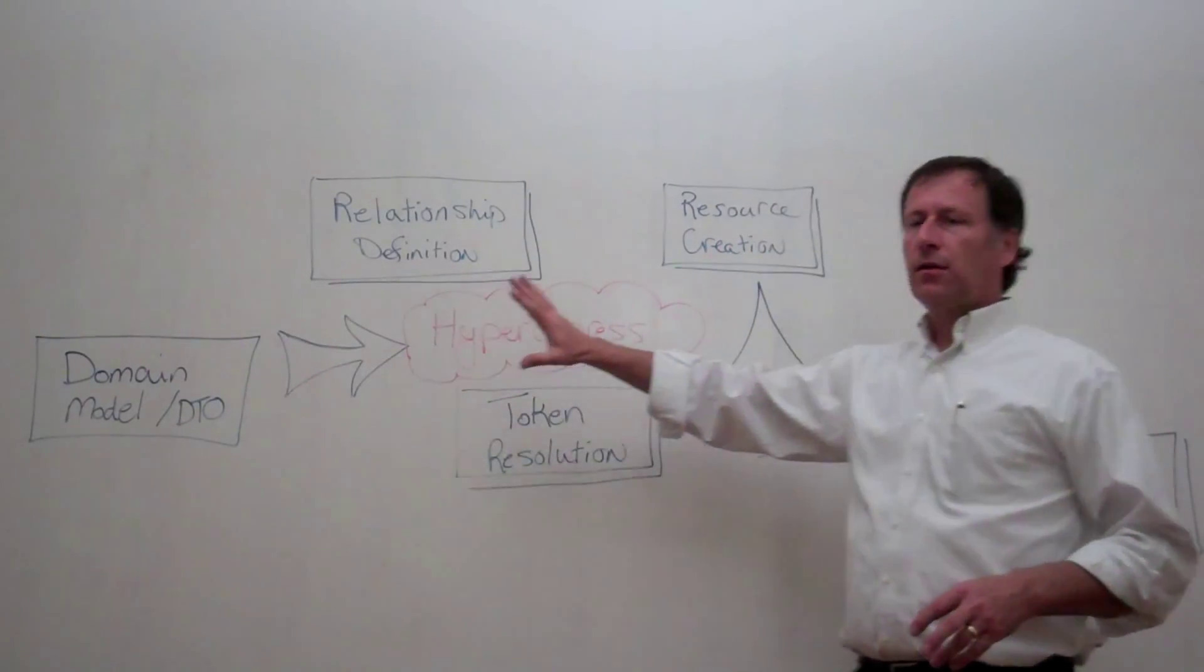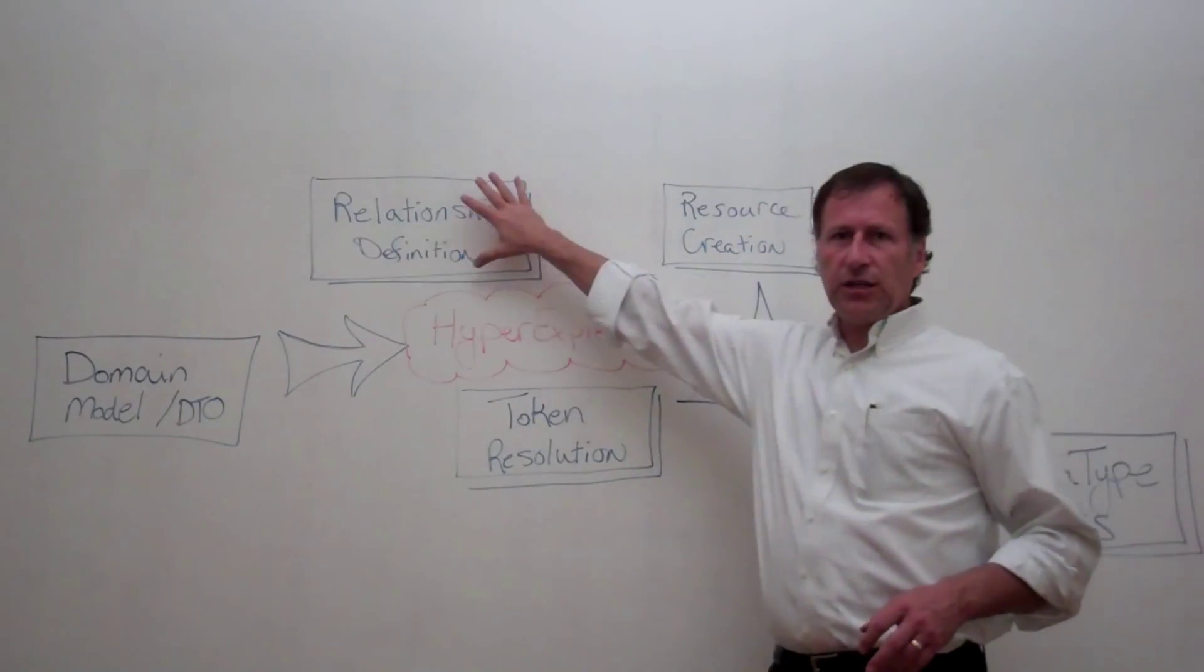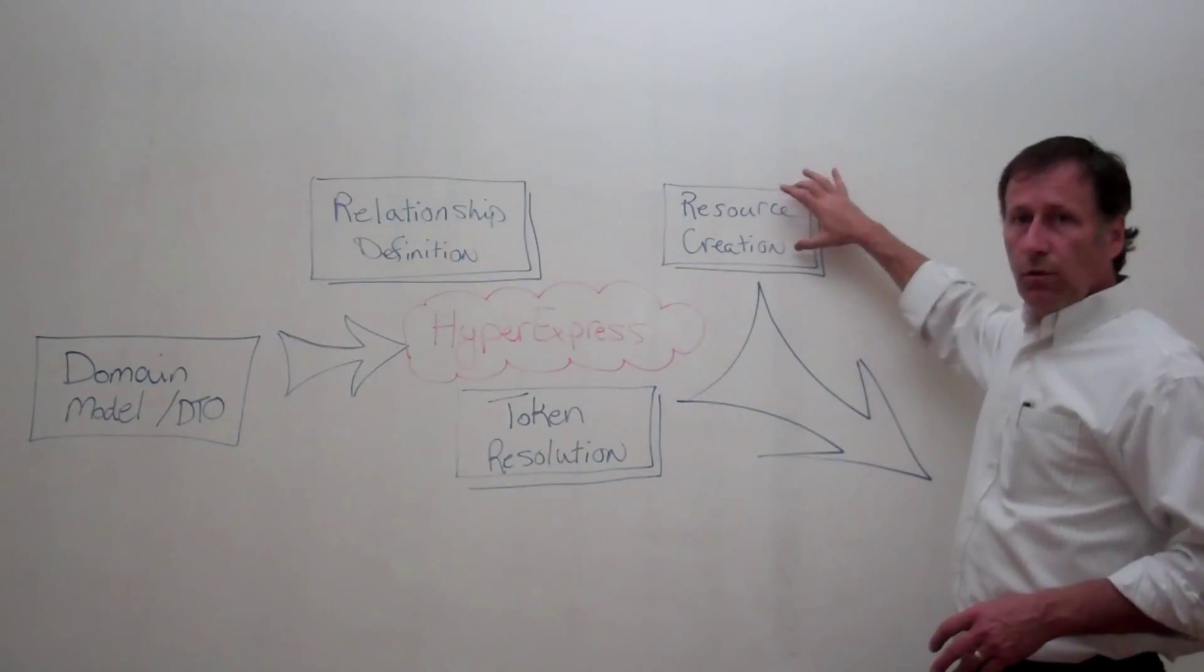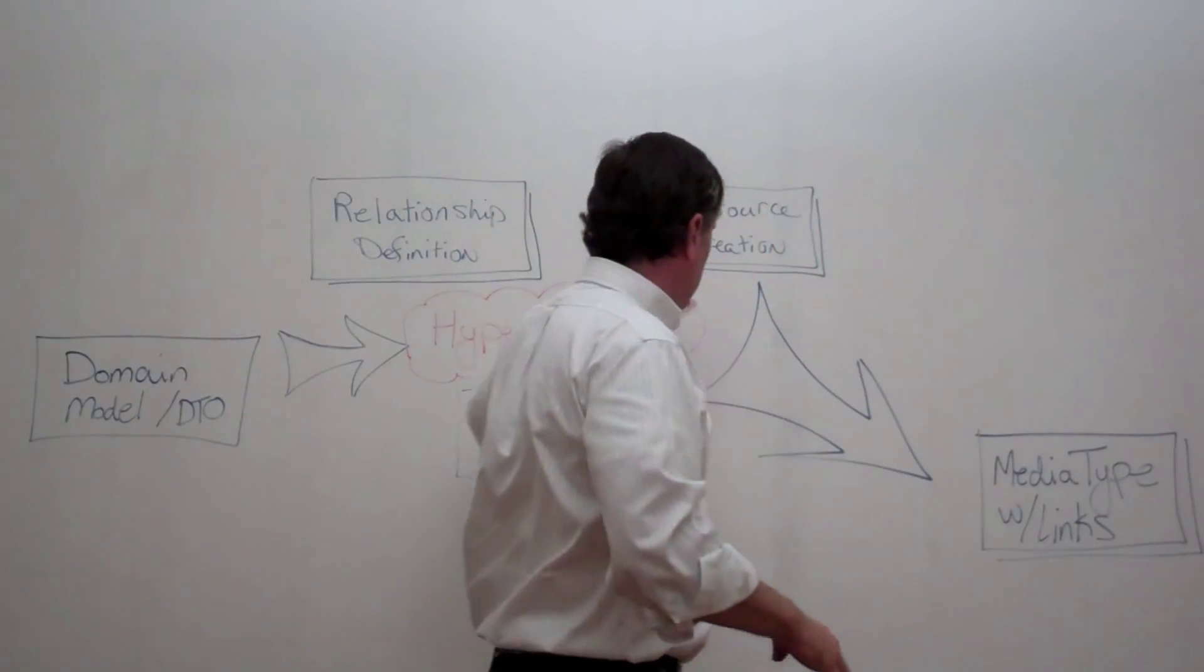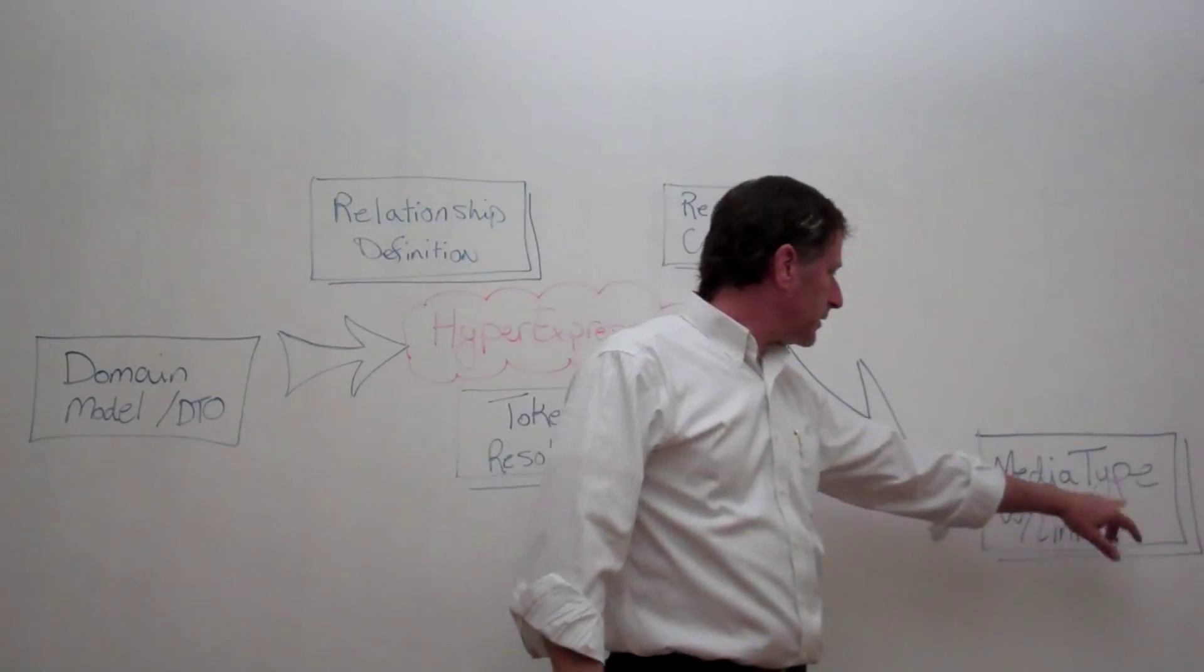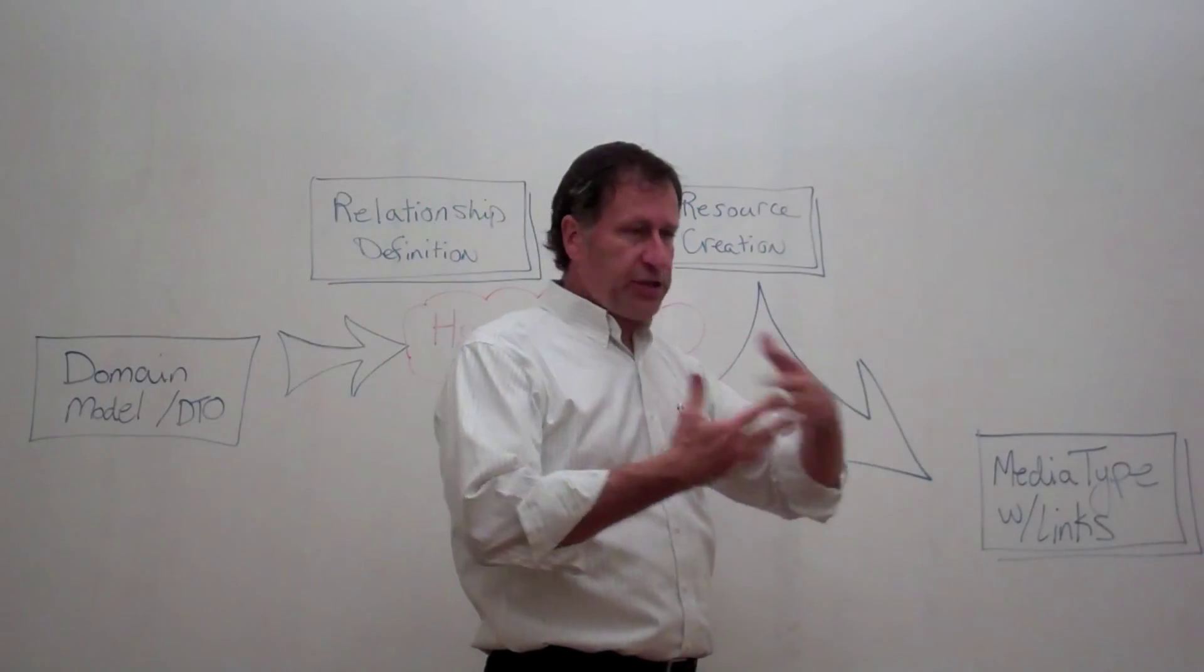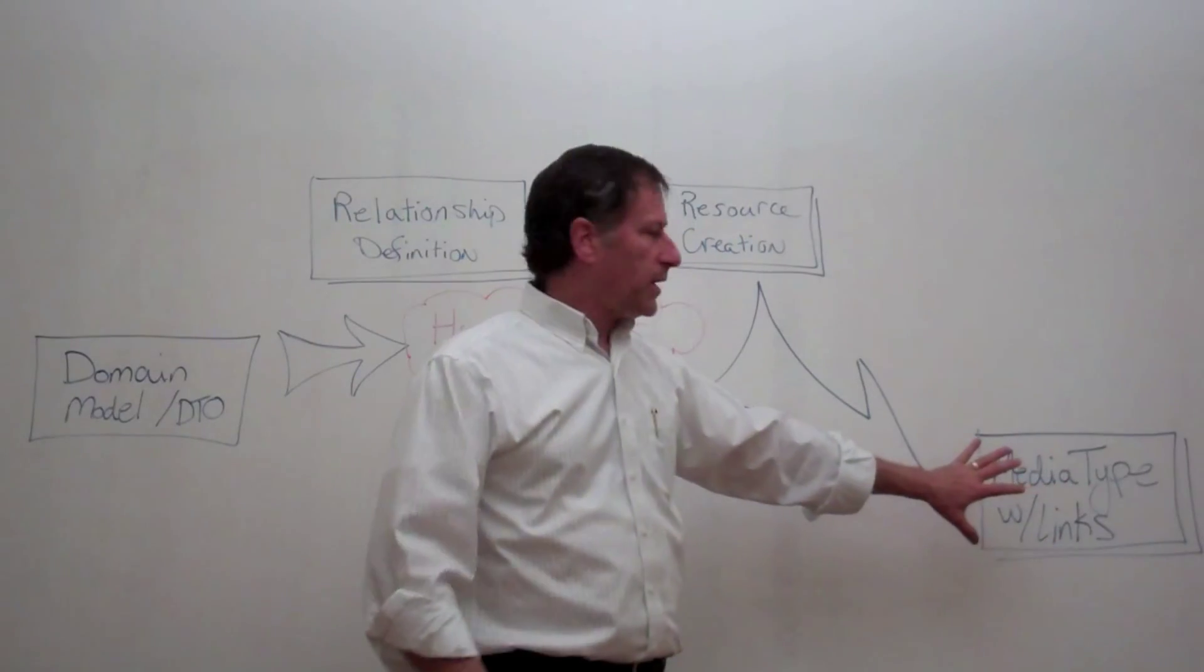It copies the properties from the domain model into the resource and then stitches in links or relationships and resolves the tokens in the URLs to that resource. Then the whole process, when it gets serialized, it creates a media type specific object or serialization of that resource with its links into the requested media type.